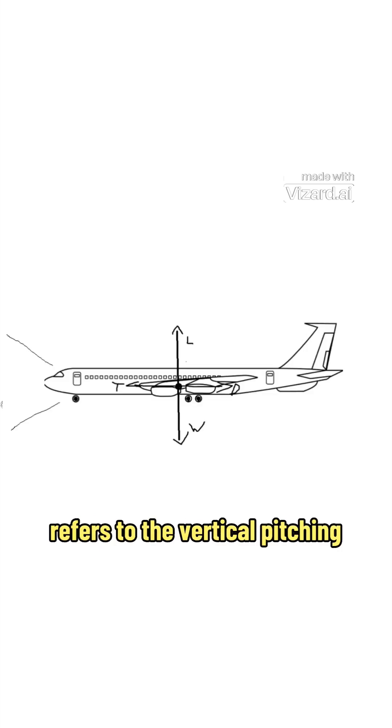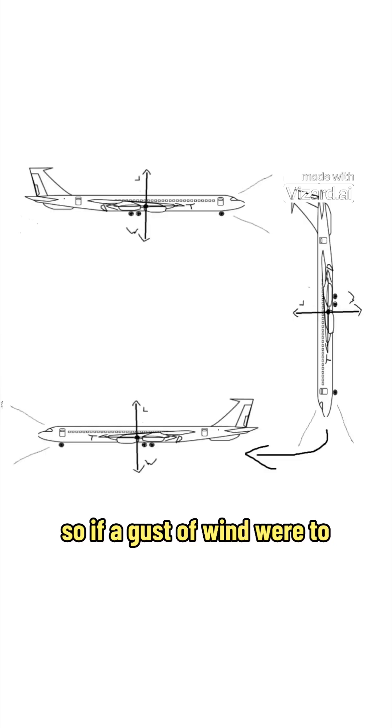Longitudinal stability refers to the vertical pitching axis of the aircraft. So if a gust of wind were to disturb the path of a stable, level-flying aircraft, making it pitch downwards, it would return to level flight.